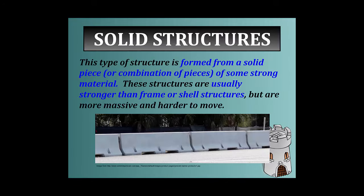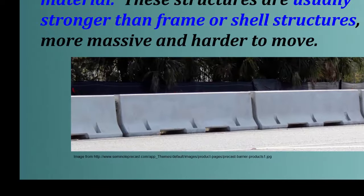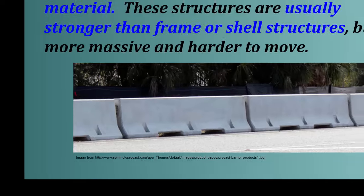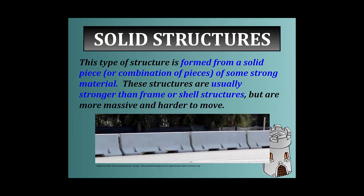First, we'll start with solid structures. This type of structure is formed from a solid piece or combination of pieces of some strong material. These structures are usually stronger than frame or shell structures, but are more massive and harder to move. These concrete barriers we see along highways and bridges are an example of a solid structure — it is solid concrete, and there is usually nothing inside except rebar, with no hollowness.